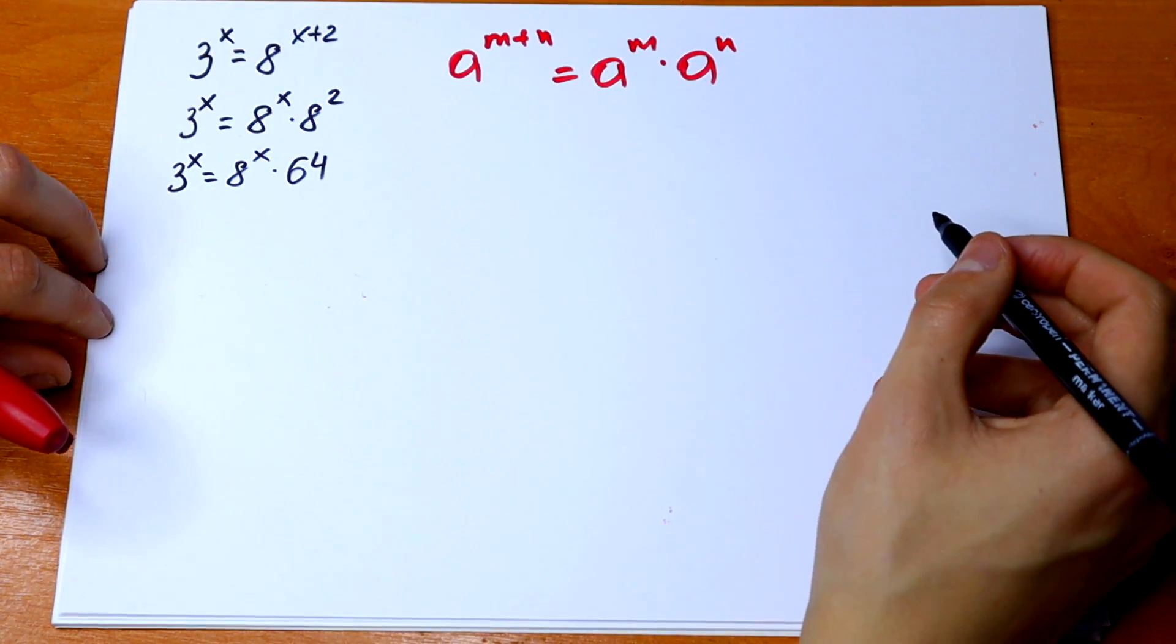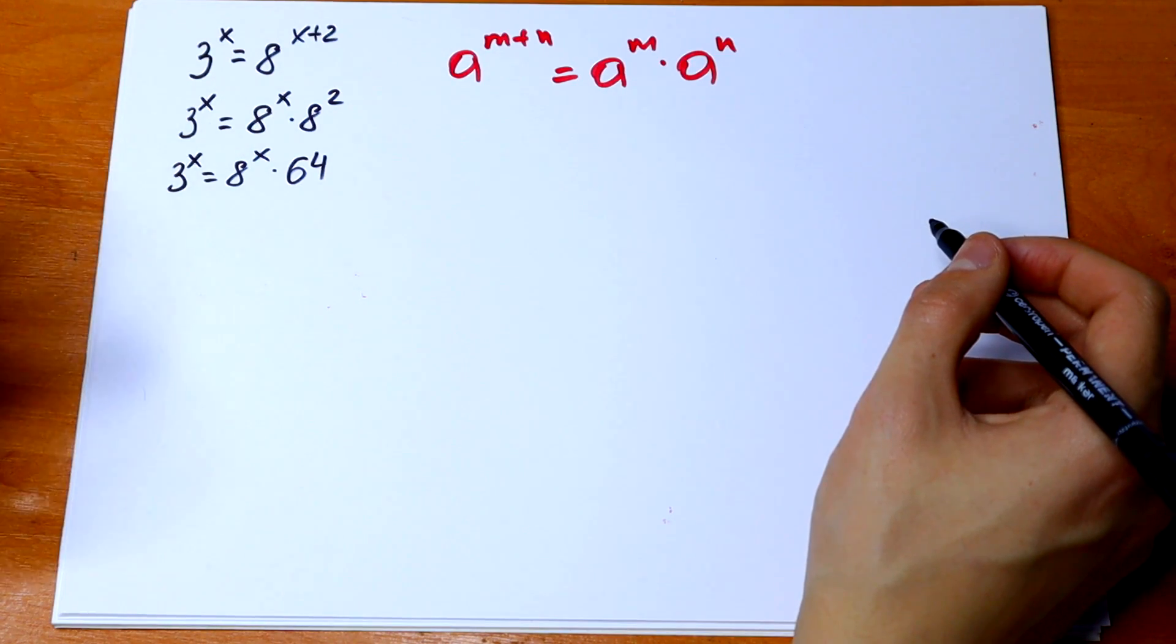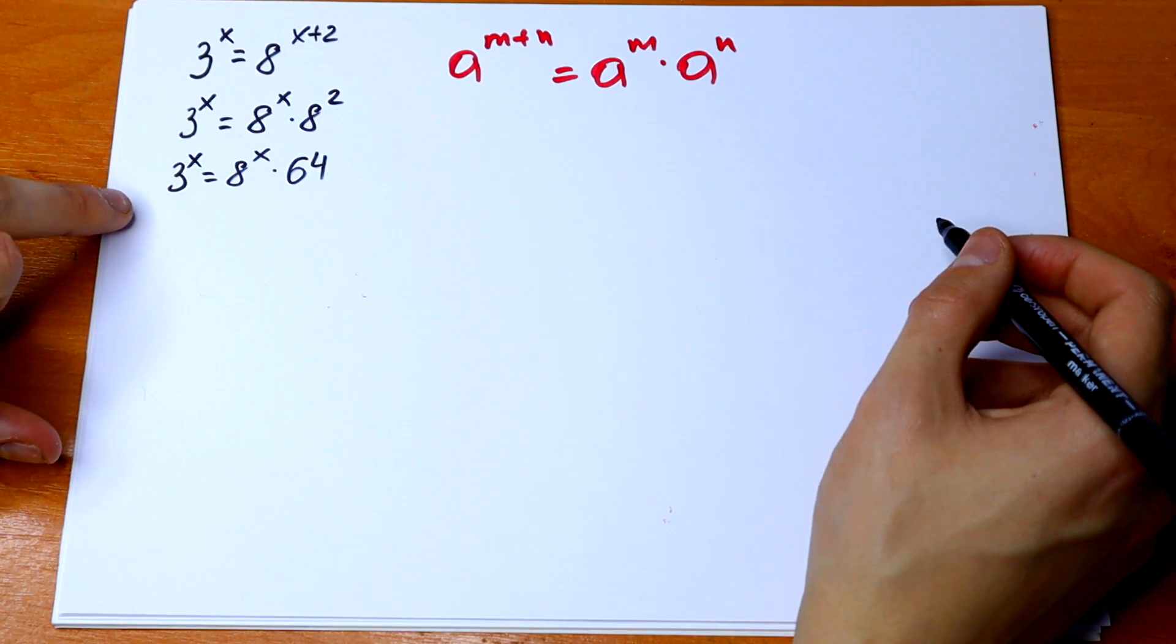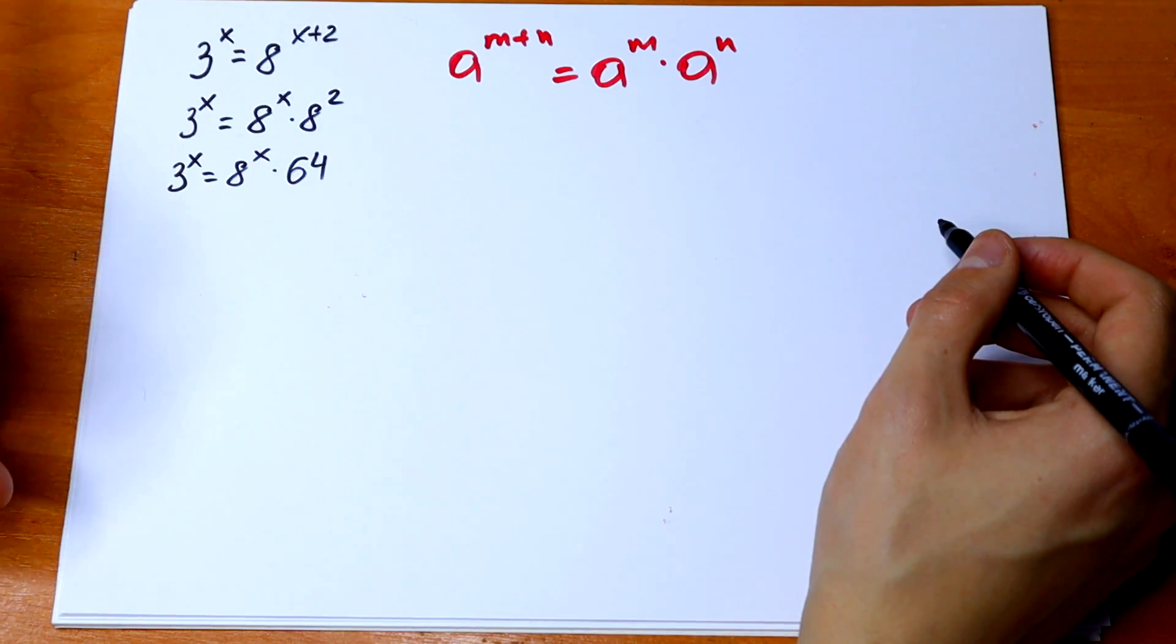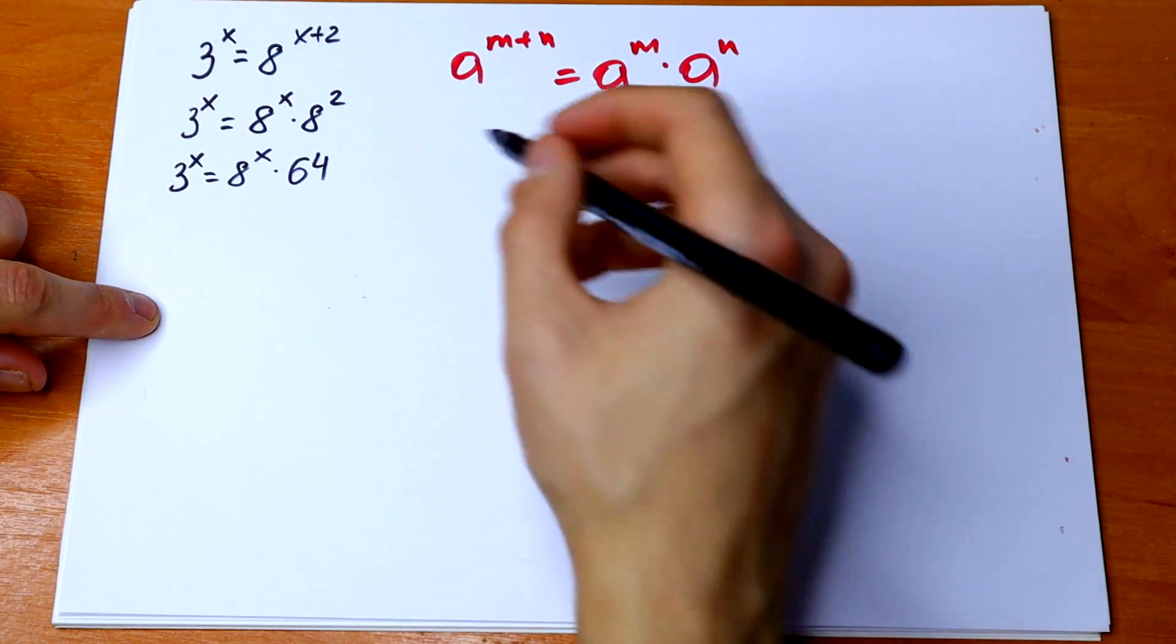The main idea to solve this type of exponential equation is to divide both sides by, for example, 3 to the power x or 8 to the power x, doesn't matter. So in our case let's divide both sides by 8 to the power x.